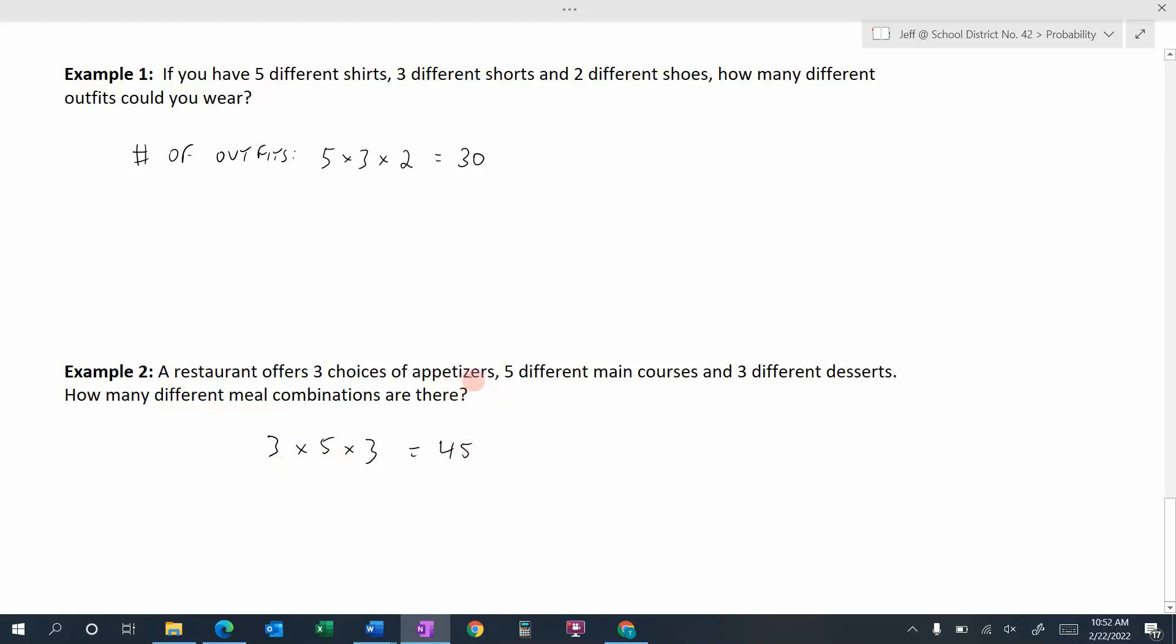If a restaurant was offering three appetizers, five main courses, and three different desserts. So that's a quick way on how you can find the total number of outcomes. Just multiply the number of outcomes that you have for each independent event, and the result will be the total number of outcomes.